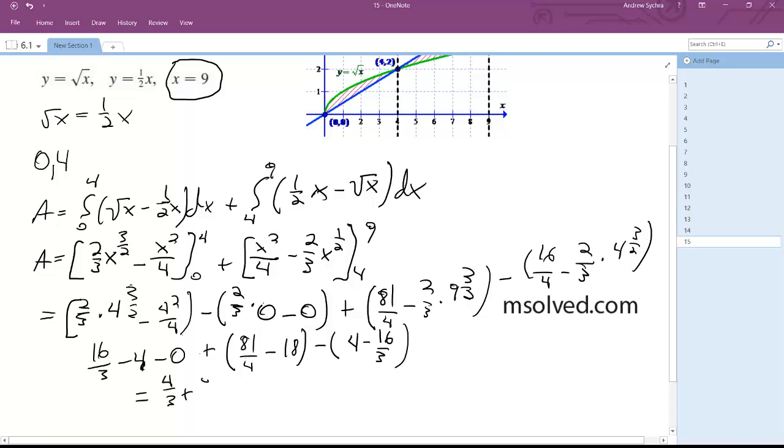4 thirds plus 9 fourths plus 4 thirds gives us 59 over 12. That's right.